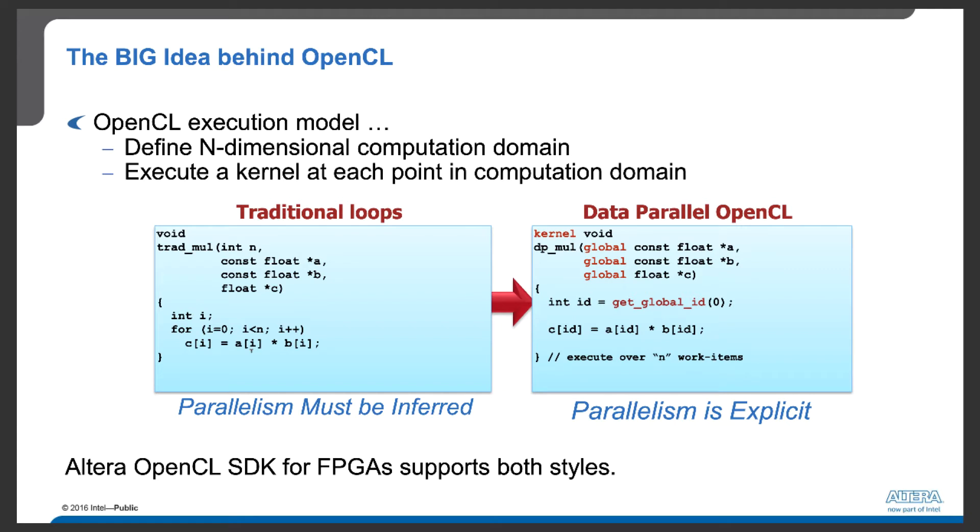Although we know the multiplication of each individual element pair can be done in parallel, this parallelism is not specified in this for loop. That's why we say in the traditional design, parallelism must be inferred.